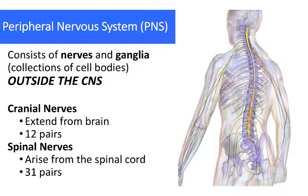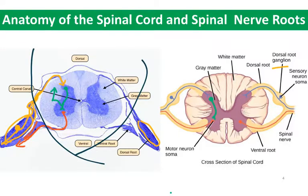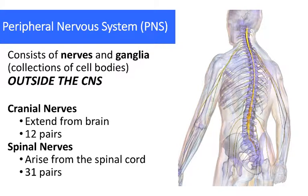The cord is part of the central nervous system. The dorsal root ganglia and the nerves are part of the peripheral nervous system. The barrier that defines the central nervous system is essentially the pia mater, the layer of meninges directly associated with the cord. The peripheral nervous system has nerves — groups of axons traveling together through the body — and ganglia, which are collections of cell bodies outside the central nervous system.